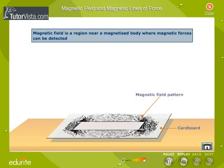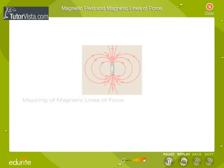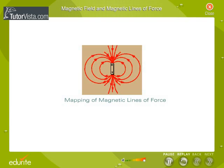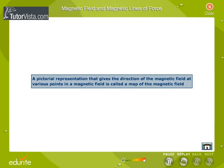A magnetic field is represented graphically by lines of force. A pictorial representation that gives the direction of the magnetic field at various points in a magnetic field is called a map of the magnetic field.